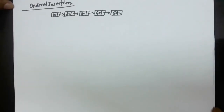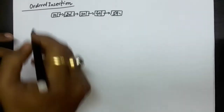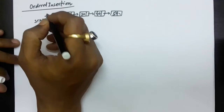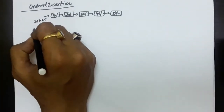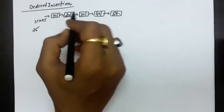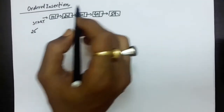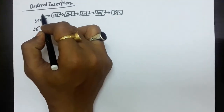In this lecture, we will see some of the functions related to the linked list. The first function we are going to discuss is ordered insertion. This means the linked list contains information in ascending sequence and we need to perform insertion at an appropriate position. For example, if you have to insert 25, it will be inserted between 20 and 30. If you have to insert 5, it will be inserted at the beginning.